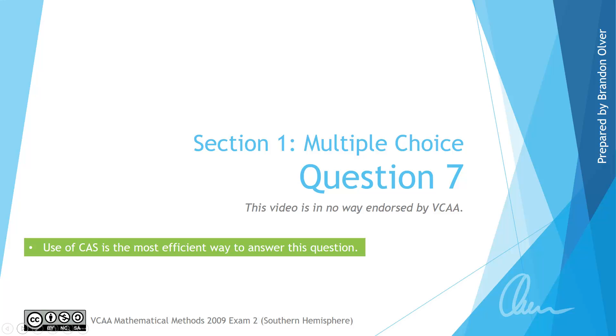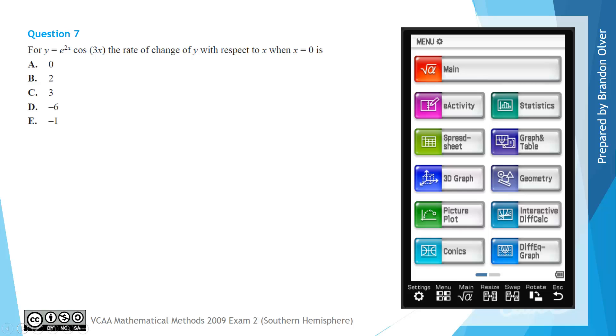So for question 7 we have for y equals e to the power of 2x times cos of 3x, the rate of change of y with respect to x when x equals 0 is. When we're asked about the rate of change, it's asking for the instantaneous rate. So we want to find the derivative dy/dx and then evaluate that when x is equal to 0.